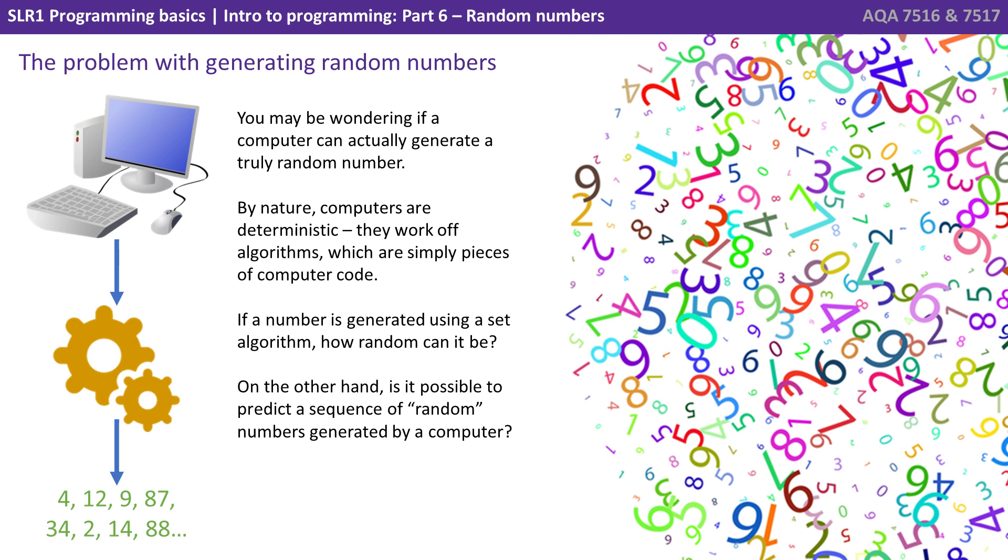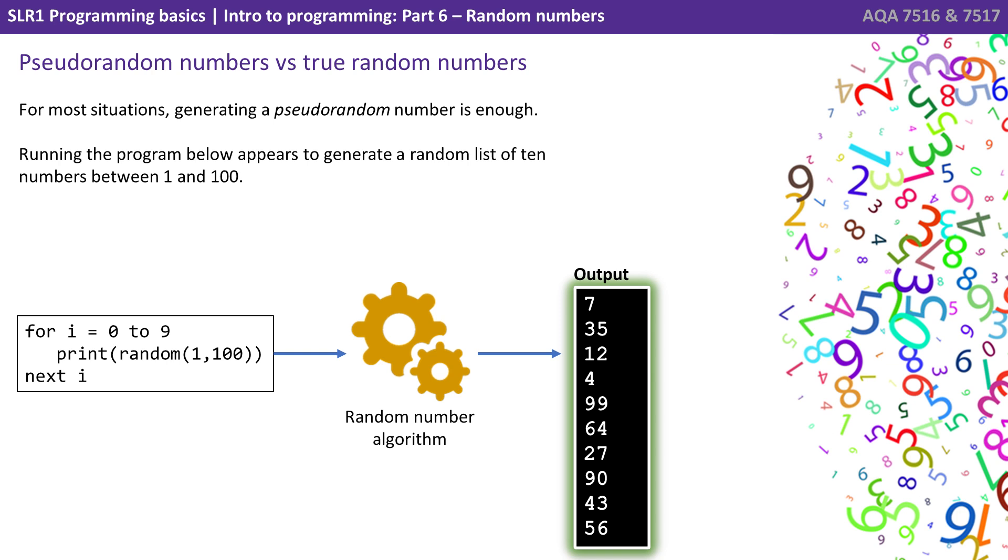If a number is generated using a set algorithm, how random can it truly be? On the other hand, is it possible to predict a sequence of so-called random numbers generated by a computer? Well, for most situations, generating pseudo-random numbers is enough. Running the program below does appear to generate a random list of 10 numbers between 1 and 100.